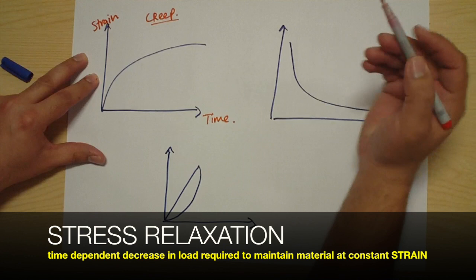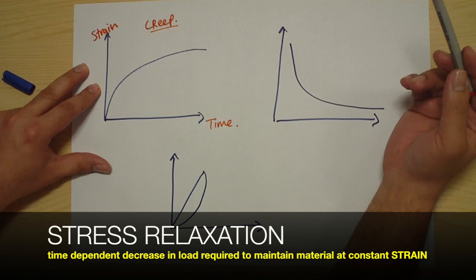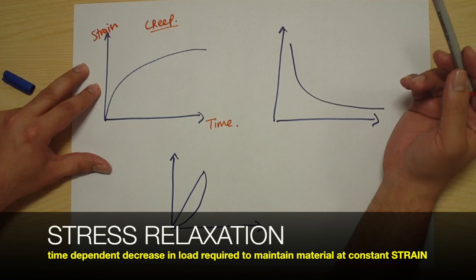The second viscoelastic property is stress relaxation. That's defined as time-dependent reduction in stress of a material under a constant strain.